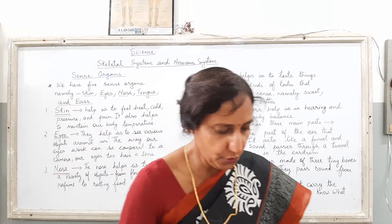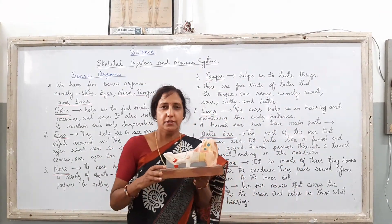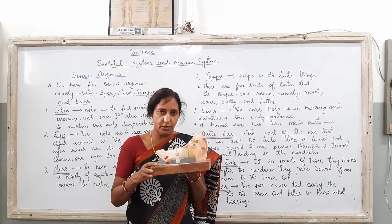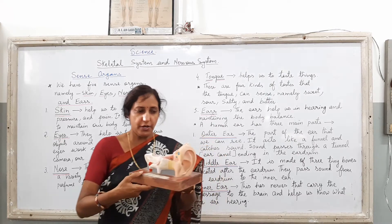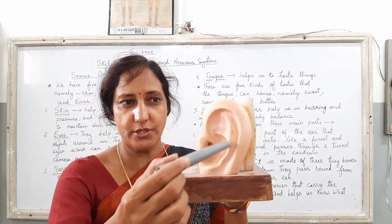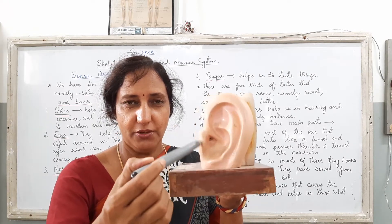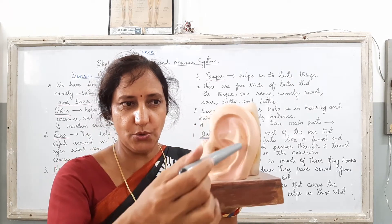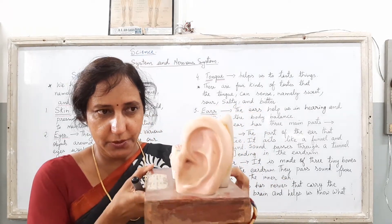Now, for you all to know better, I have got a model with me of the structure of the ear. With the help of this model, you will learn the internal structure of the ear. First, you have to see the outer ear, how it looks. As you are also able to see your own ear, this is known as the structure of the outer ear.